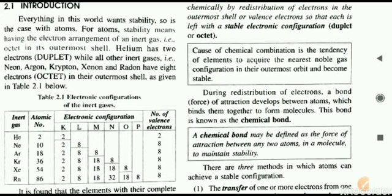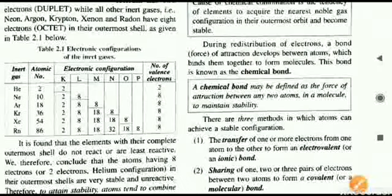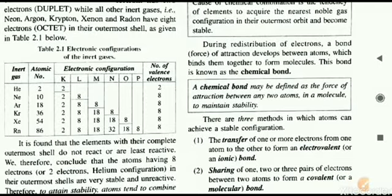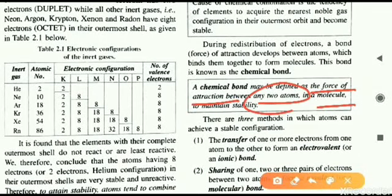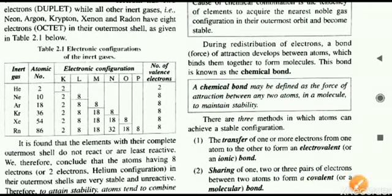Having discussed the cause of chemical combination — achieving stability — we now look at what a chemical bond is. A chemical bond is a force of attraction between two atoms to form a molecule. The atoms can be of the same element or different elements. They develop a force of attraction and come close to form a molecule. The reason is stability. Chemical bonding is done in three different methods.